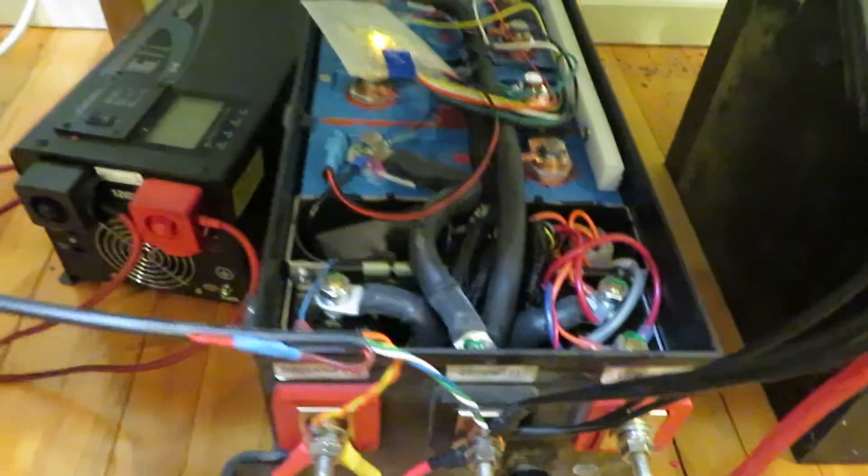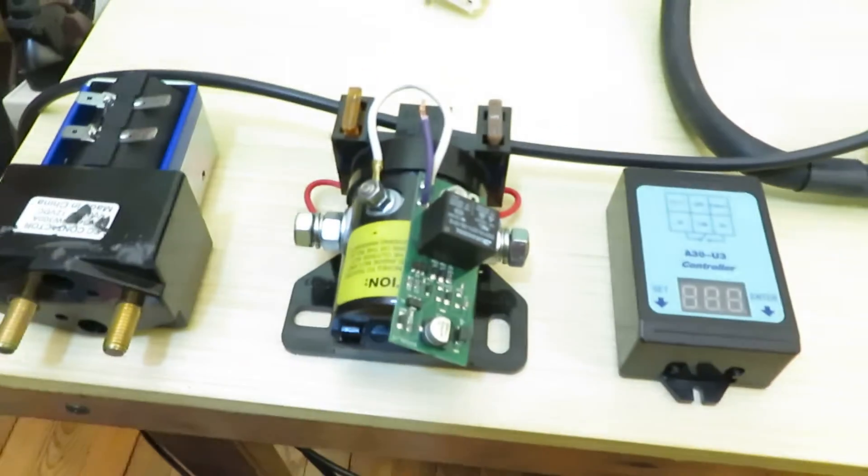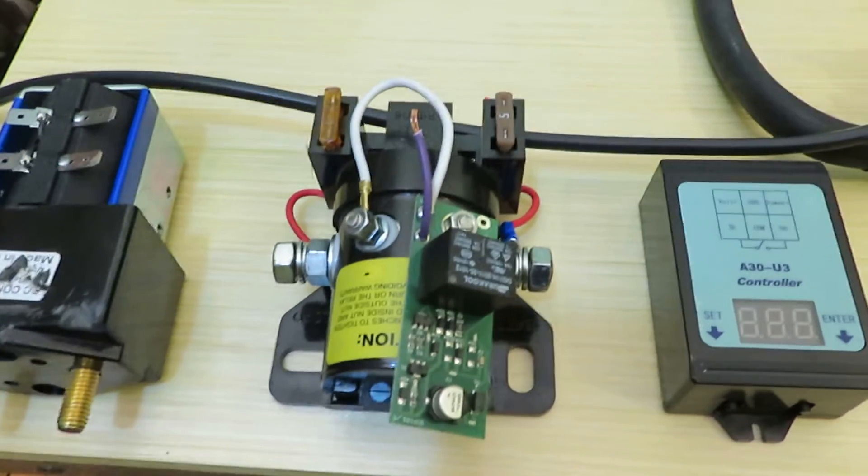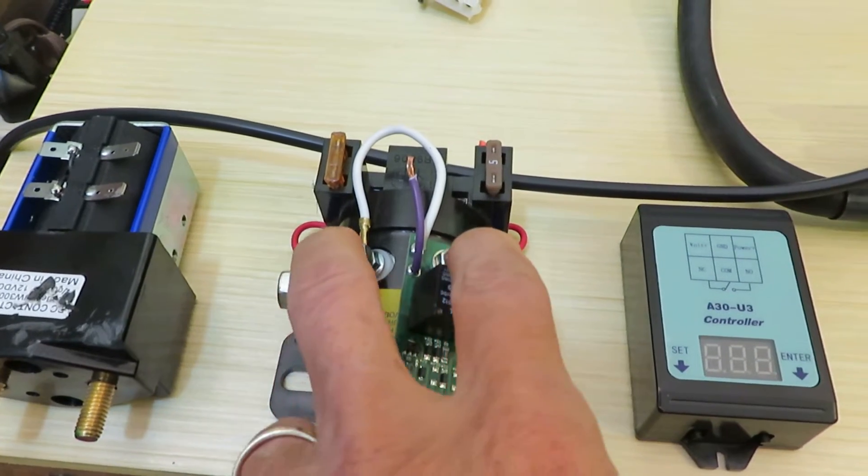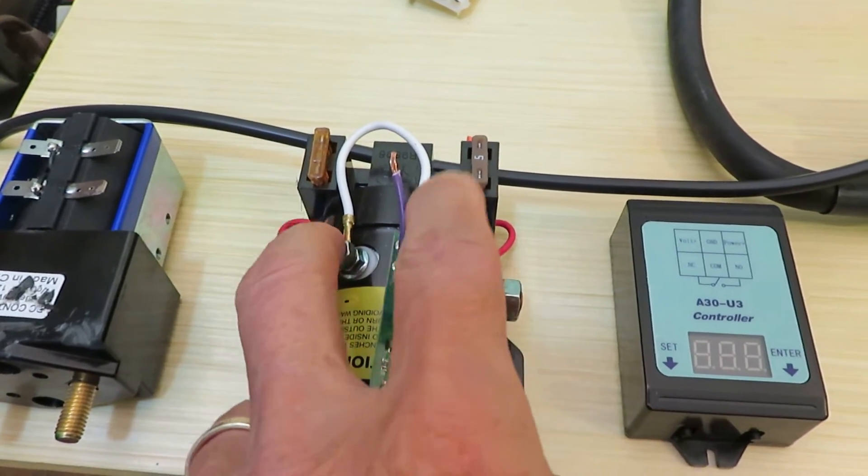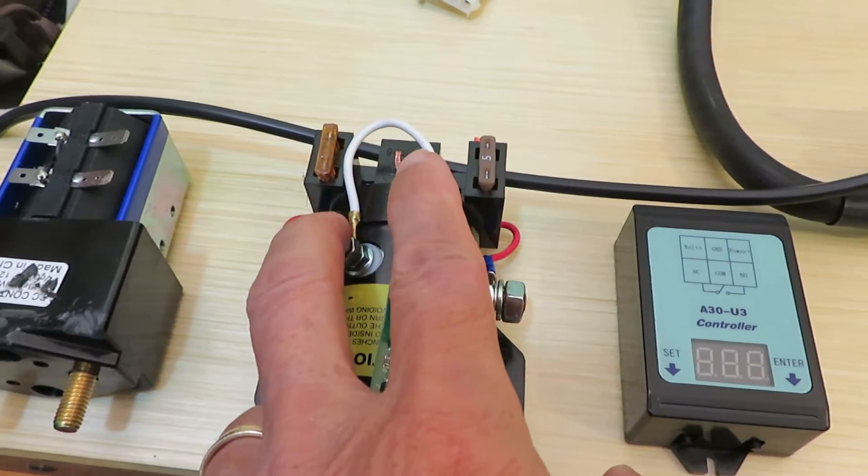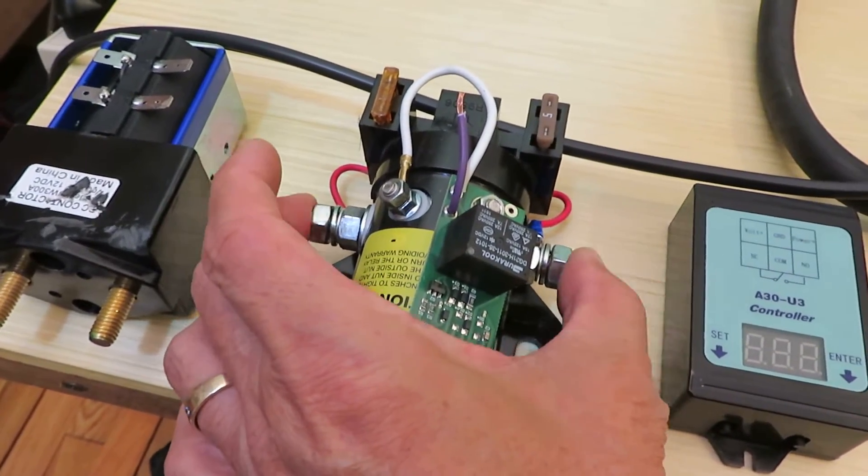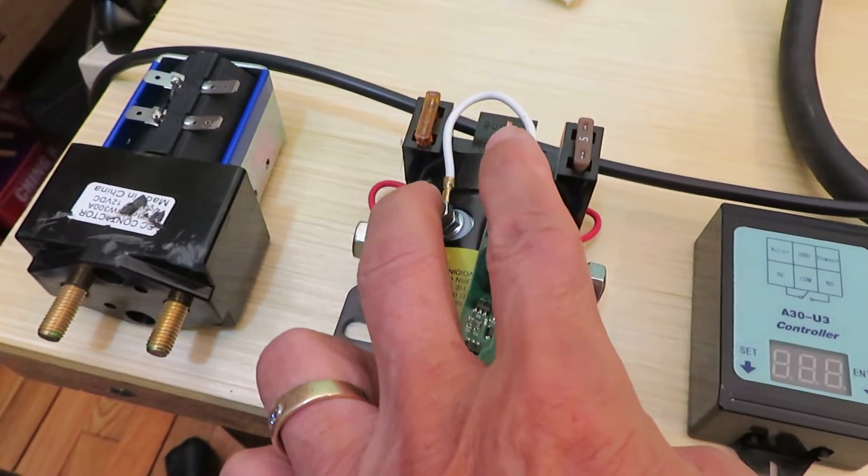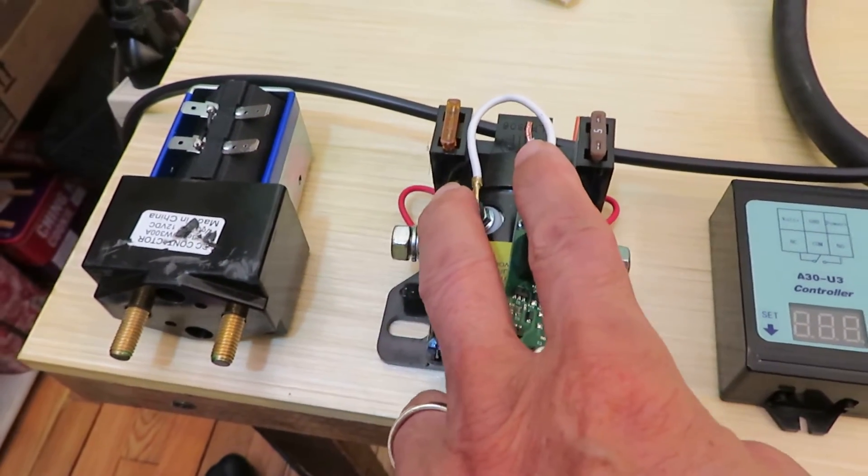The second one is a latching relay. The reason is latching because you don't need a constant power source to close it. You pulse it will latch. You pulse it again it will unlatch. So this way on and off depends on how many times you pulse this.